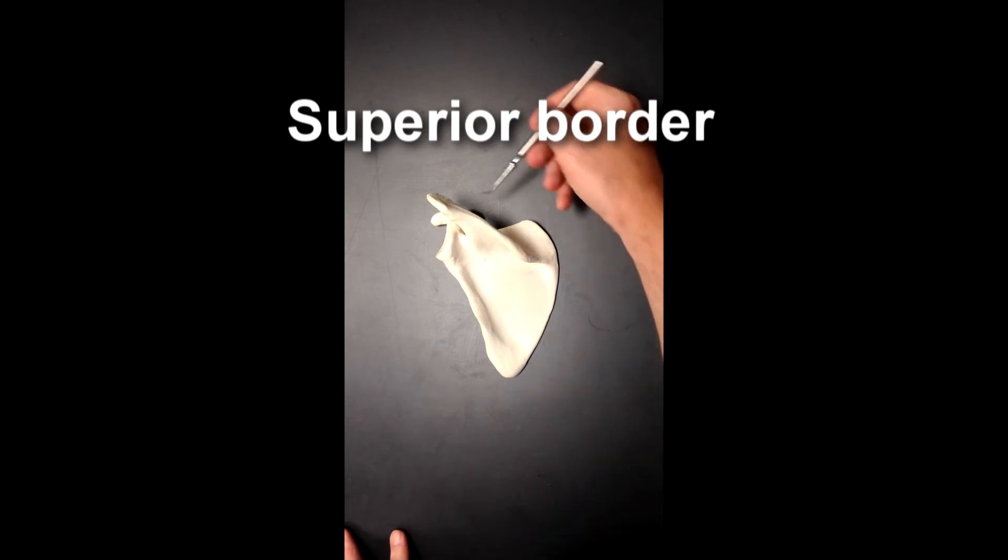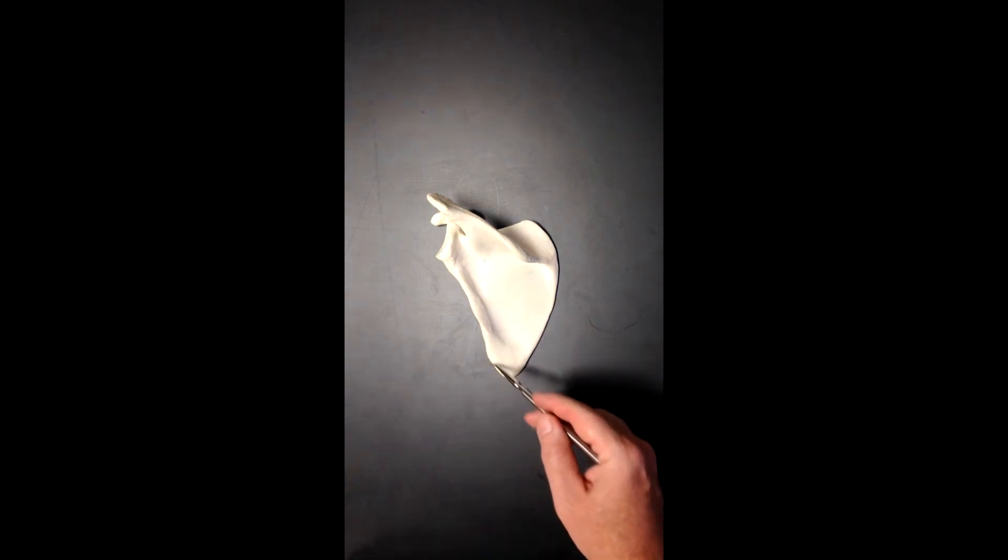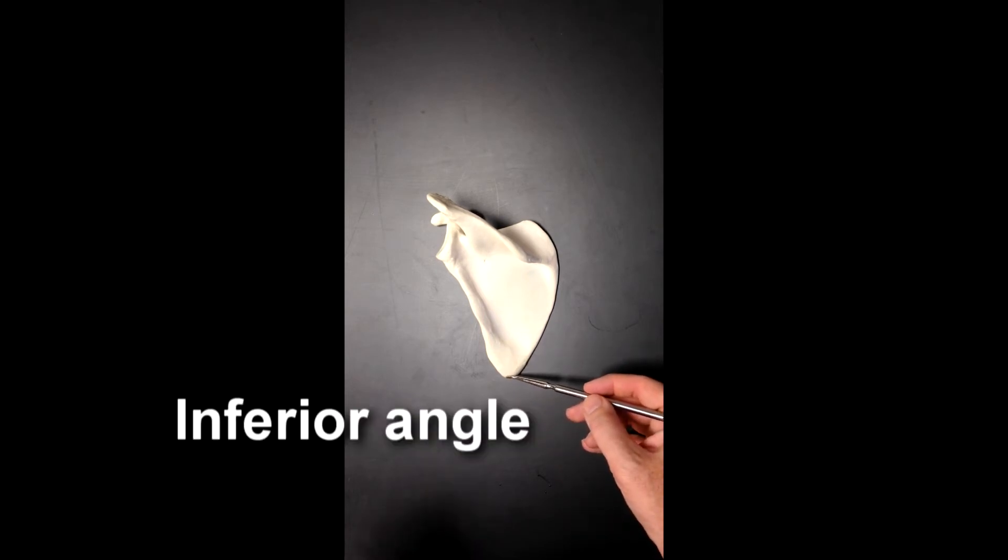The superior border of the scapula would be up here, so this would be the upper part of the scapula, this would be the lower part of the scapula. This angle right here would be the inferior angle of the scapula.